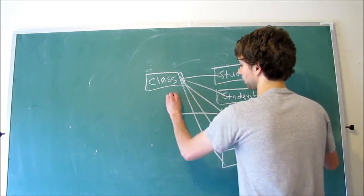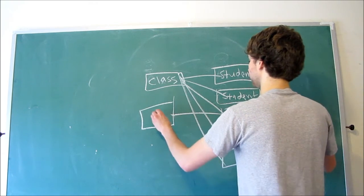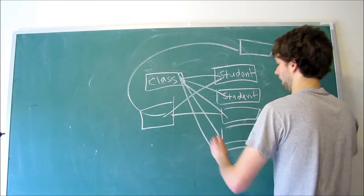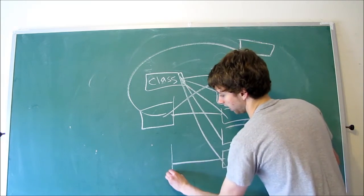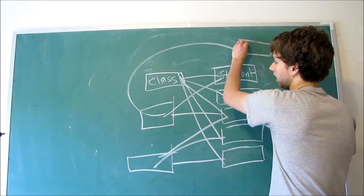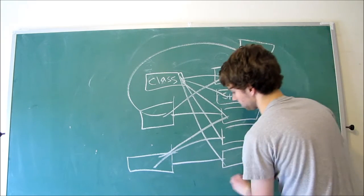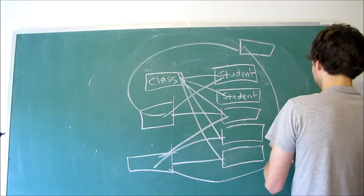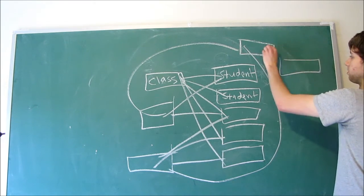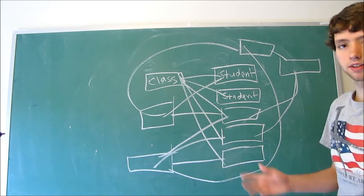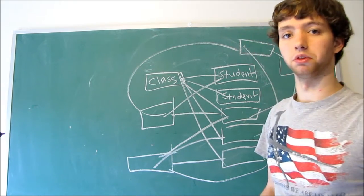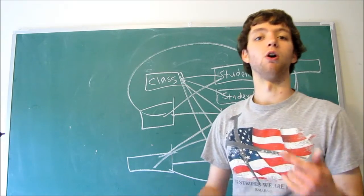So this student can take this class. And this class can be taken also by that student. And this student over here. And then this student can take another class, which can have this guy in it. And this guy. And this guy can be in this class as well. And by the way, he is also taking another class. So he's in that class, which has that student and that student. And it just gets very complex. So you can see, this might be very, very difficult to store within a relational database.